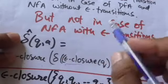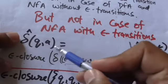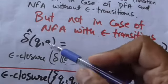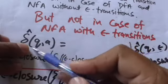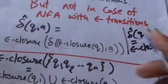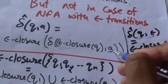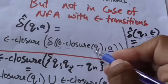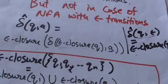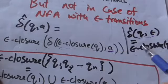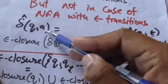We can find the output of the extended transition function for NFA with empty transitions for present state q and input symbol a as follows: First, find the empty closure of state q. Then apply the input symbol a to the empty closure of state q — we will get a set of states. Then find the empty closure of that set of states, and that will be the output of the extended transition function for state q and input symbol a.